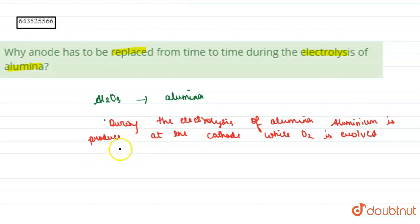While O2 is evolved at anode where oxidation occurs, this oxygen reacts with the graphite electrode. See, the anode is made up of graphite and this oxygen gas reacts with graphite electrode to produce CO2.